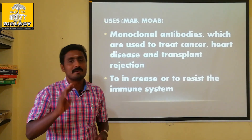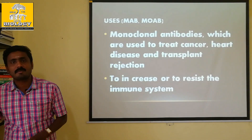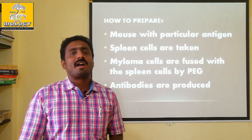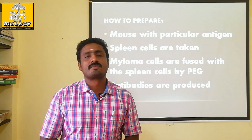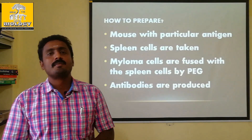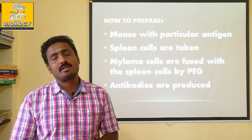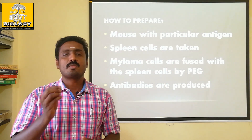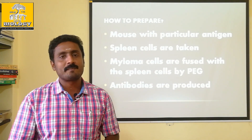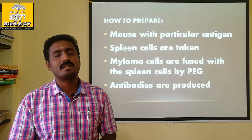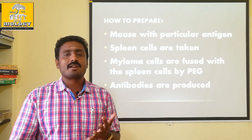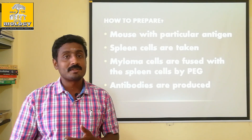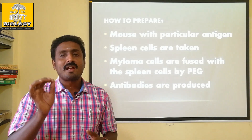How do you prepare monoclonal antibodies? First of all, you need to understand antigen-antibody interactions. An antigen is a pathogen — for example, bacteria or a virus. It is called an antigen. The antibody is produced against that antigen.